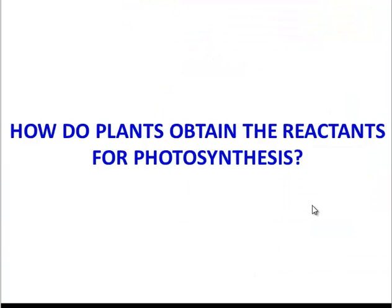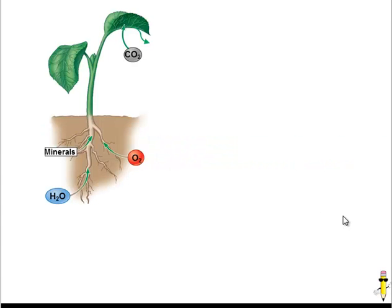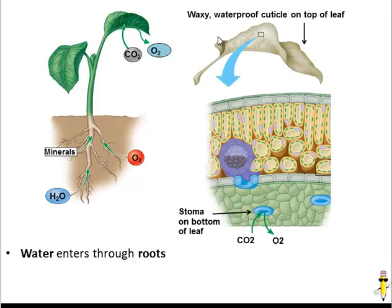So how do plants get the reactants that they need to perform photosynthesis? Well, they get the water from the roots. Most people know that. Carbon dioxide is a little bit trickier because the leaves of plants on the top are coated with a waxy